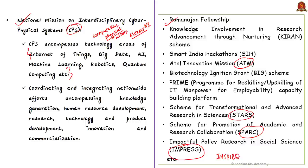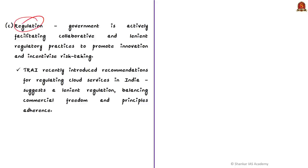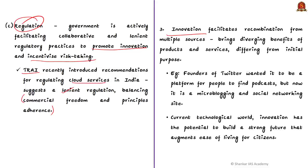The third aspect is regulation. The government is actively supporting collaborative and lenient regulatory practices to promote innovation and incentivize risk-taking. For example, TRAI has recently introduced recommendations for regulating cloud services in India, suggesting lenient regulation which balances both commercial freedom and principles adherence. The third reason is that innovation facilitates recombination from multiple sources, bringing diverging benefits sometimes differing from initial purpose. For example, founders of Twitter wanted it to be a platform for people to find podcasts, but now it is a microblogging and social networking site. Similarly, Swiggy and Dunzo have integrated offline stores with online technologies.